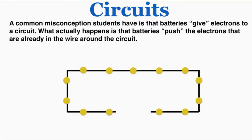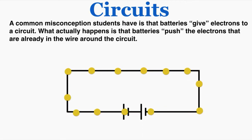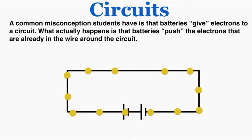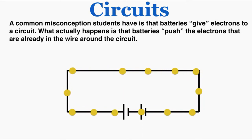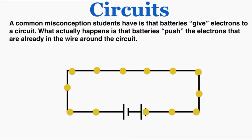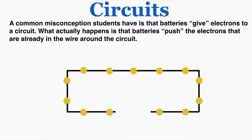As an example, here I have an incomplete circuit. It has a hole in it, so the electrons can't move right now. But when I introduce a battery, the battery begins to push the electrons around — it gives the electrons voltage, potential energy, and they begin to move around the circuit. That's a common misconception to watch out for. And if I remove the battery, you can see that the electrons stop moving.